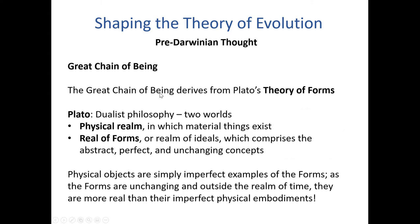The great chain of being derives from Plato's theory of forms. Plato is a very famous philosopher who believed in a dualist philosophy — two worlds, basically. The world we live in where material things exist, he called the physical realm. Then there was the realm of forms or realm of ideals, which comprises the abstract, perfect, and unchanging concepts behind the physical forms.